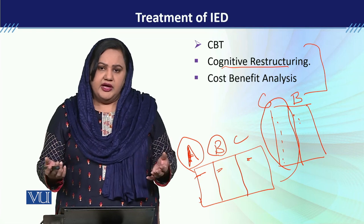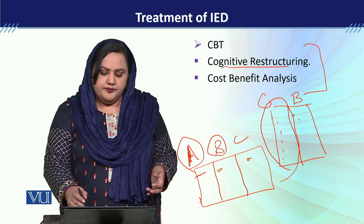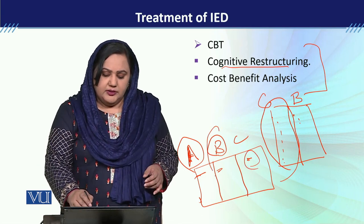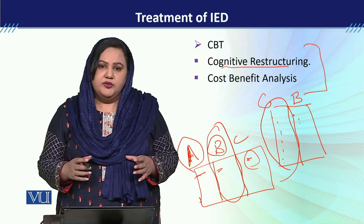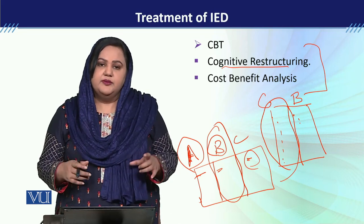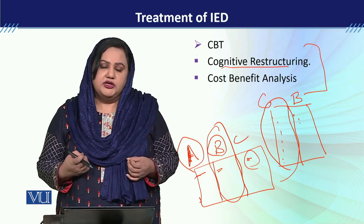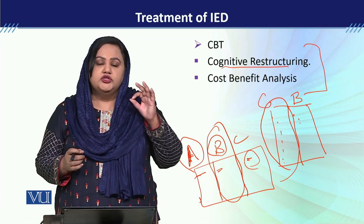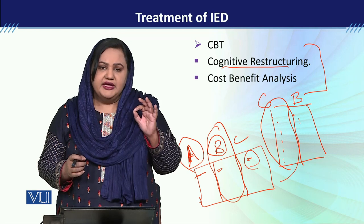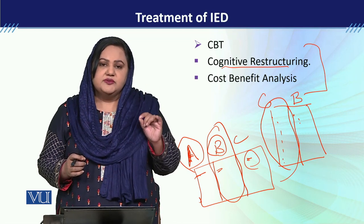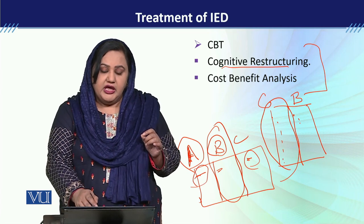And then C — consequences: آپ کو anger feel ہوا یا کوئی اور behavioral disruption تھی۔ جو B ہے، یعنی thought pattern، that is very important۔ اس thought pattern کو identify کرنے کے بعد ہم نے بچے کو cognitive distortions کے بارے میں بتانا ہوتا ہے — یہ وہ cognitive distortions ہوتی ہیں جو basically aggressive behavior کی طرف lead کرتی ہیں۔ اس میں ہم بچے کو educate کرنے کی کوشش کرتے ہیں کہ جو situation ہے وہ ویسے ہی رہے گی۔